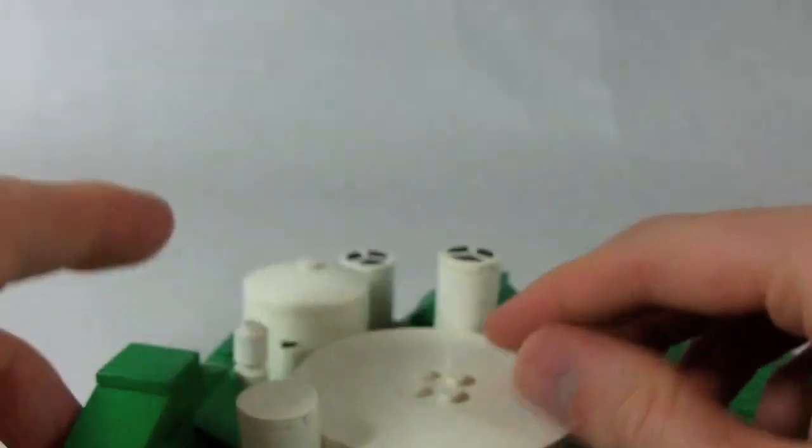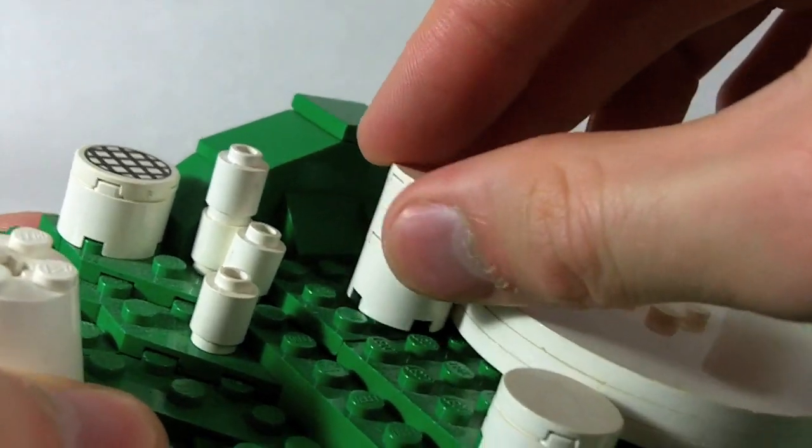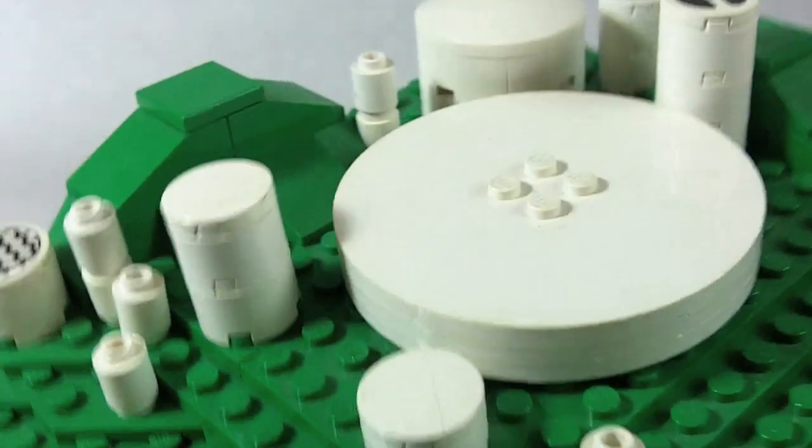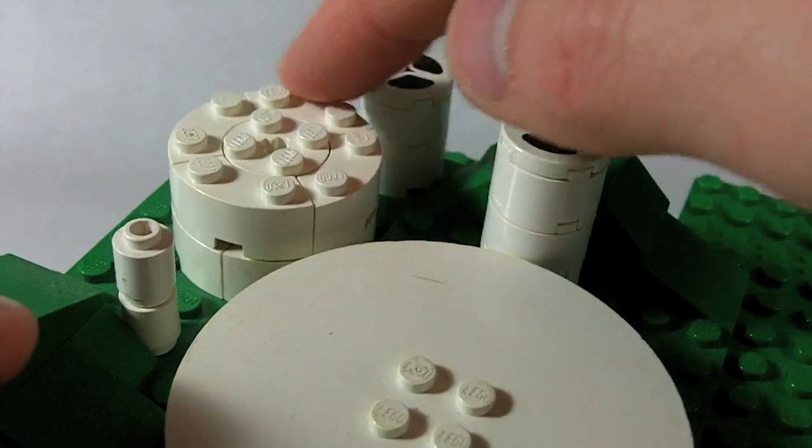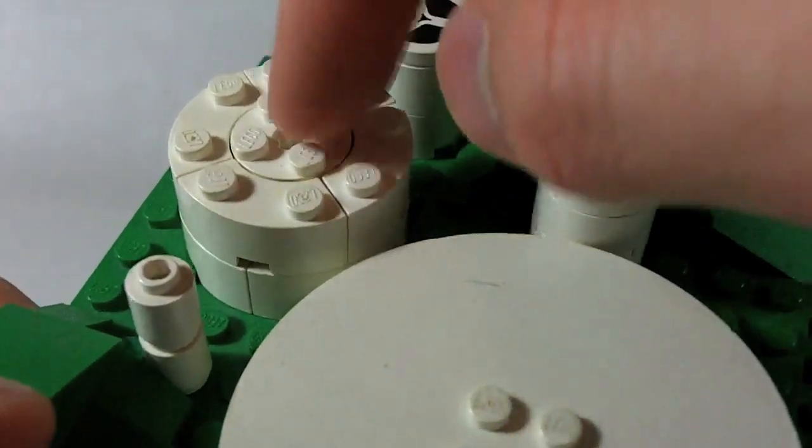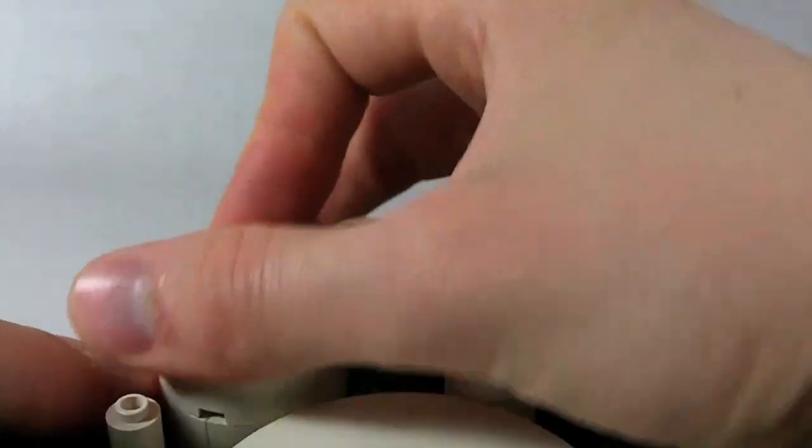It sort of looks like the Guggenheim. And then these are just cylinders. And back here this is a bunch of the macaroni shaped bricks with a cylinder in the middle, and then just a radar dish on top.